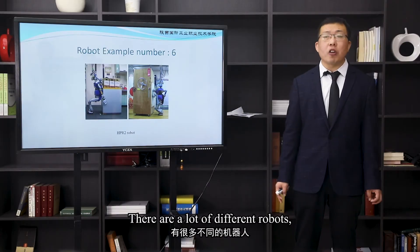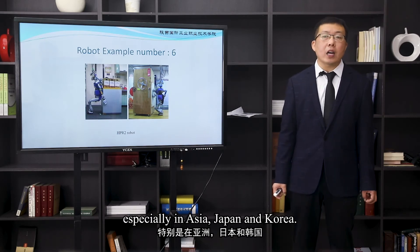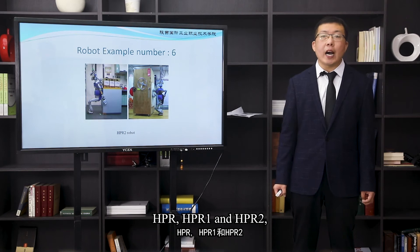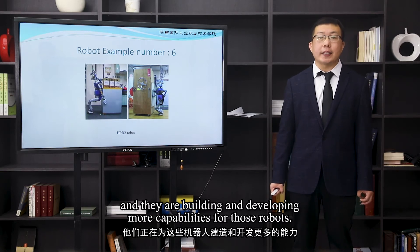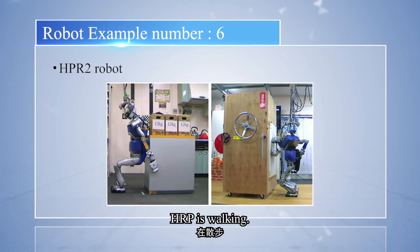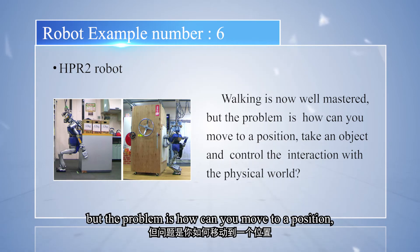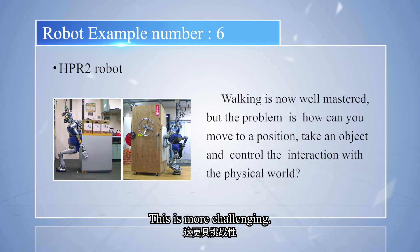There are a lot of different robots in Asia — Japan and Korea have built a series of robots: HRP1 and HRP2. They are building and developing more capabilities for those robots. HRP2 is walking, though walking is not yet well mastered. The challenge is how can we move to a position, take an object, and control the interaction with the physical world — this is more challenging.